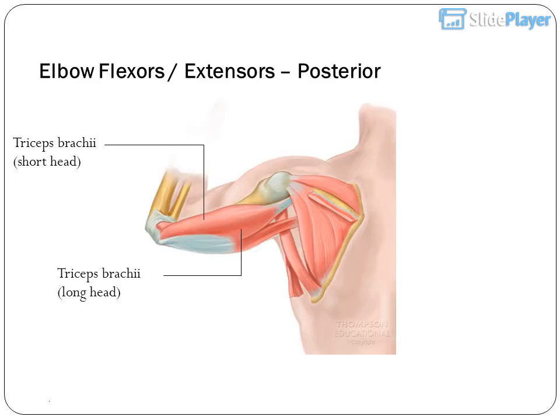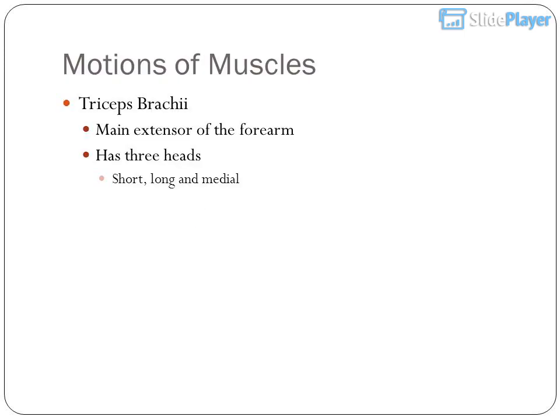Elbow flexors and extensors — posterior: triceps brachii short head, triceps brachii long head. Motions of muscles: triceps brachii is the main extensor of the forearm and has three heads — short, long, and medial.